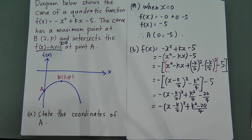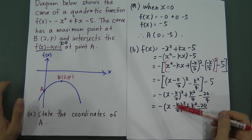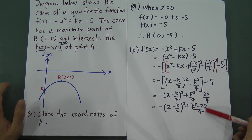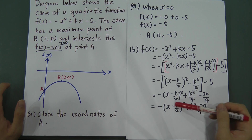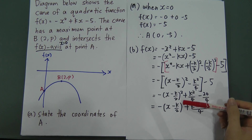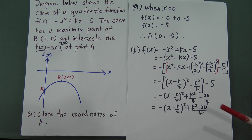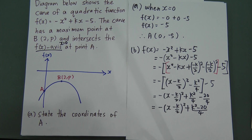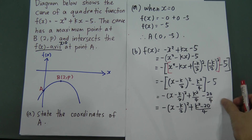From the completed square form, the x-value of the maximum point comes from (x - k/2) = 0, so x = k/2. The y-value, or maximum value, is (k² - 20)/4. Since the maximum point B is given as (2, p), I substitute x = 2 into x - k/2 = 0.